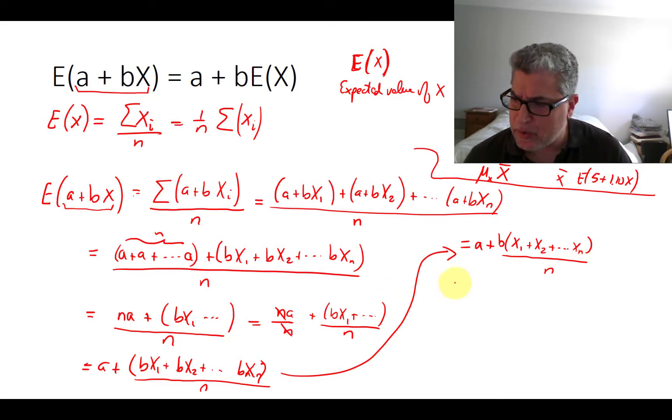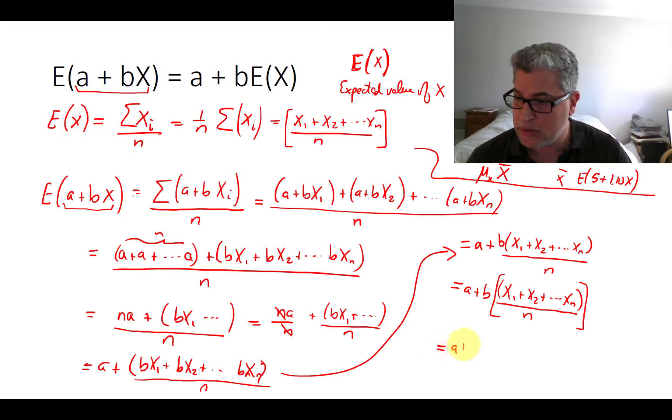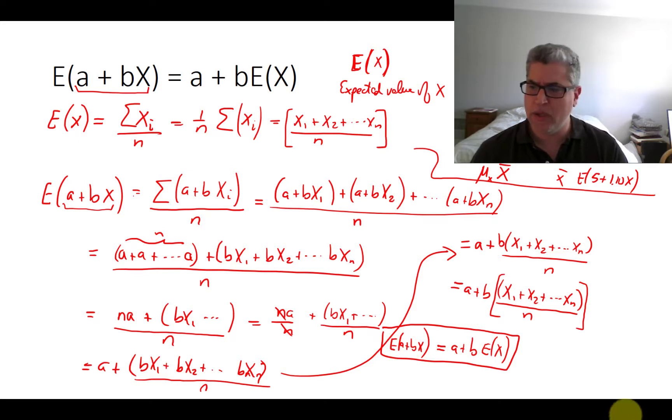Let me write this just a slightly different way, just to make the punchline a little bit more obvious. What's that term in brackets? Does that look familiar? It should look like an average. The average is just x1 plus x2 all the way through xn, and then we divide by n. So this term in brackets is equal to this term in brackets, which is just the expectation of x. So what did we just prove? The expectation of the linear transformed variable can be calculated like this.